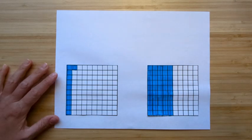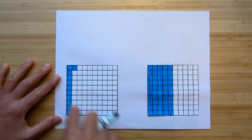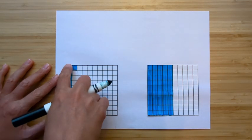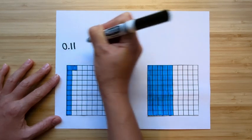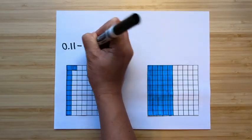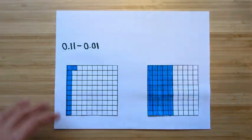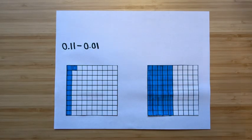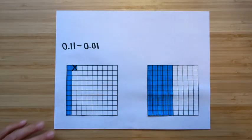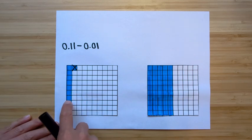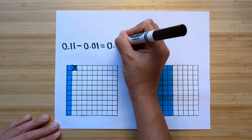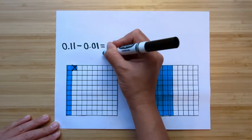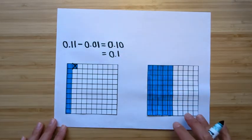Last couple of examples. This grid is also divided into one-hundred pieces, so it's hundredths. We have eleven-hundredths, and I want to take away one-hundredth. Eleven-hundredths minus one-hundredth: cross out one-hundredth and count what's left — one through ten. I know one full row or column is ten, so I have ten-hundredths left. Or I could also say one-tenth, which is the same thing.